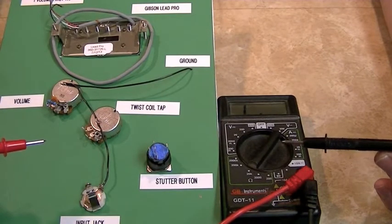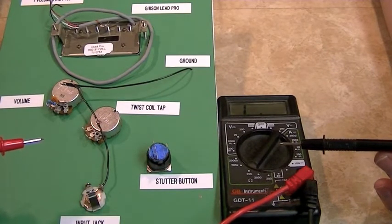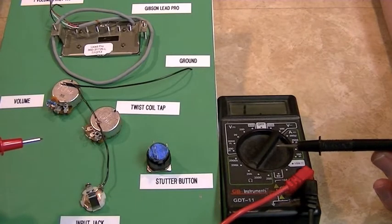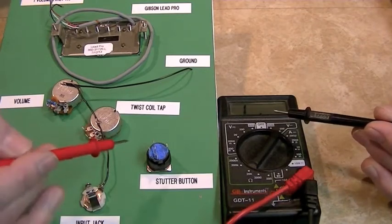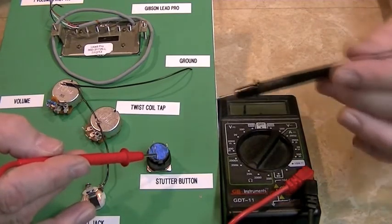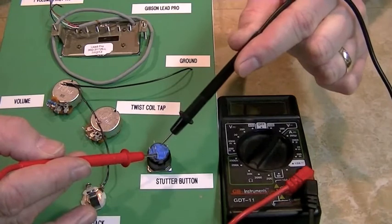Now, we want to make sure that the electricity actually flows through this when the button is not pushed. So by doing this, we'll take our meter here, we'll go to the common, and then we'll just see what happens when we go to the center pole.